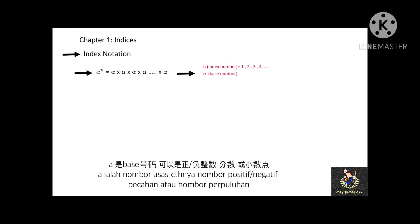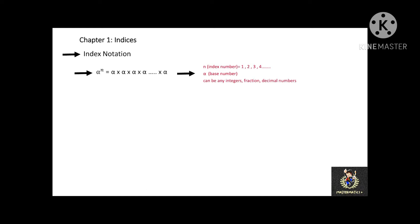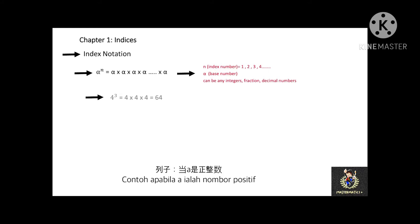The alpha can be any integers, fractions, or decimal numbers. Let's see more examples. 4 to the power of 3 equals 4 times 4 times 4, which is 64.